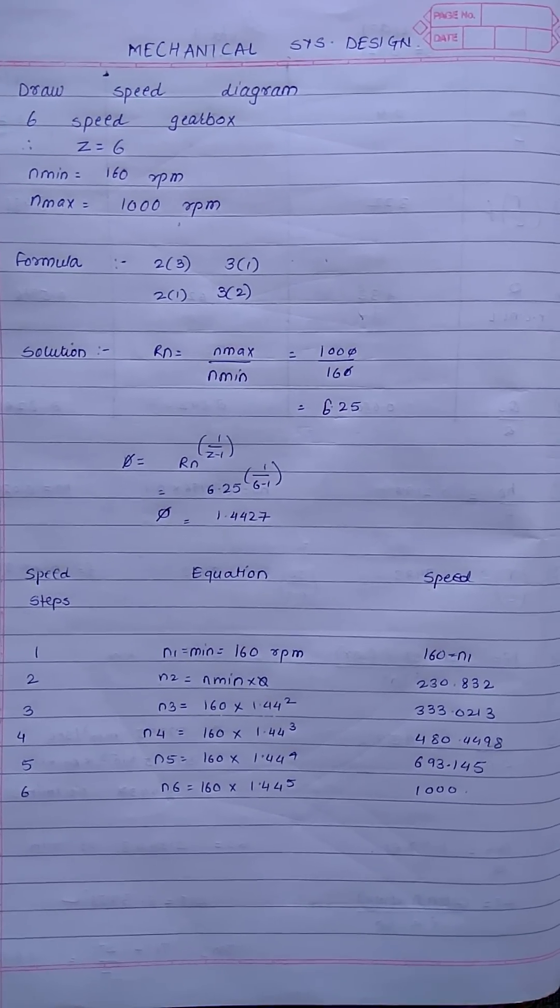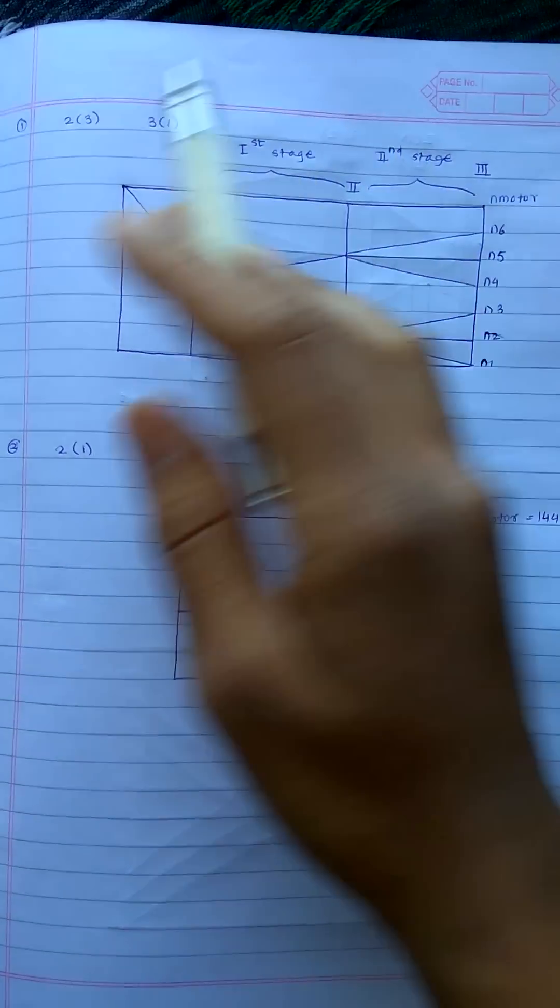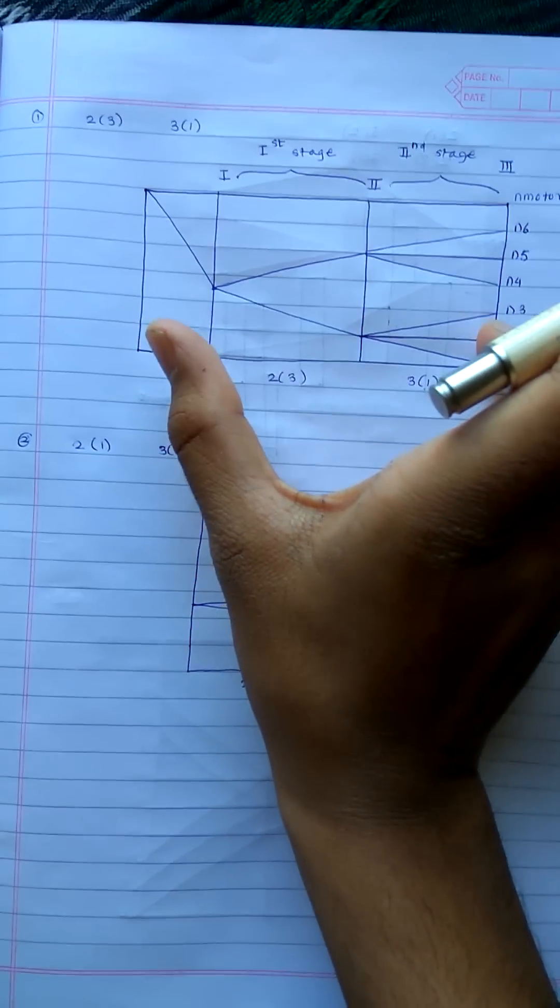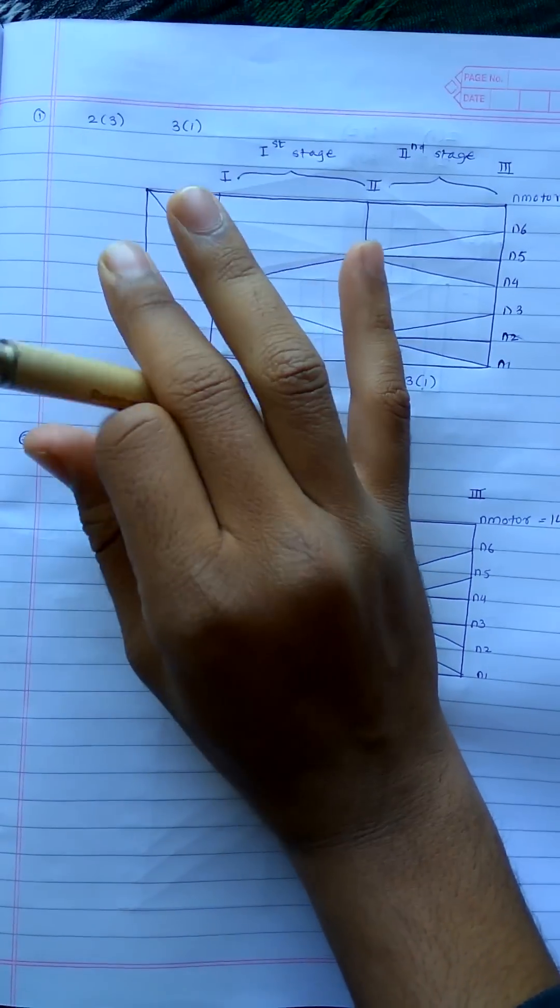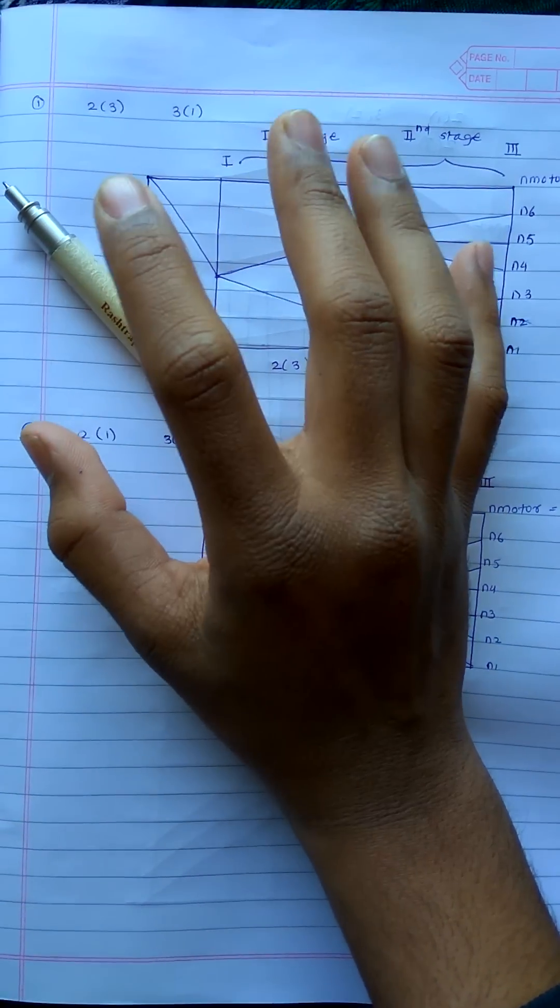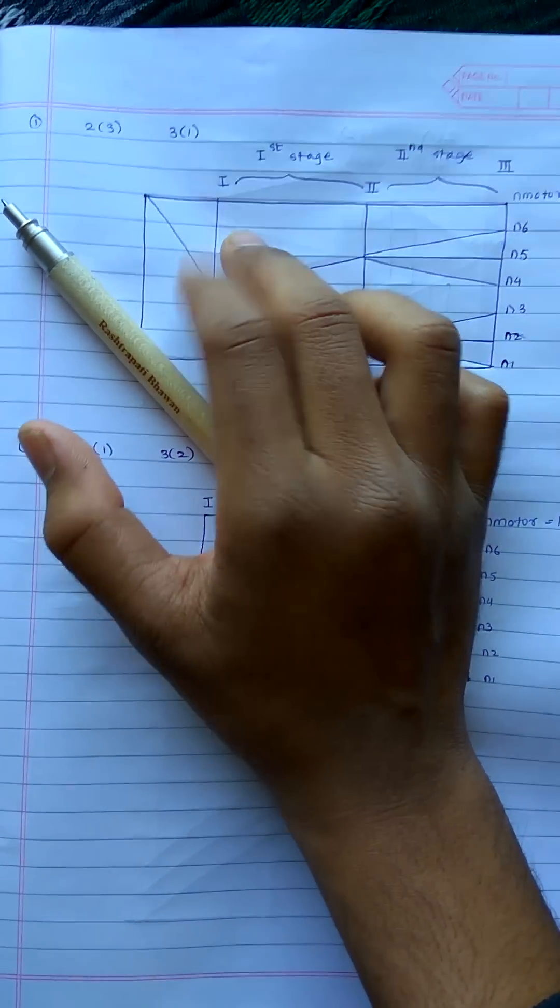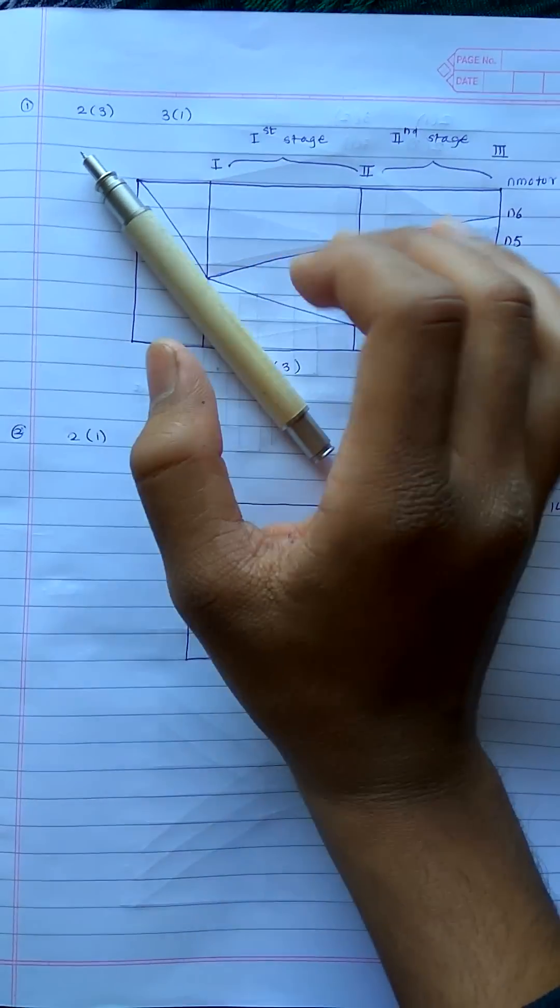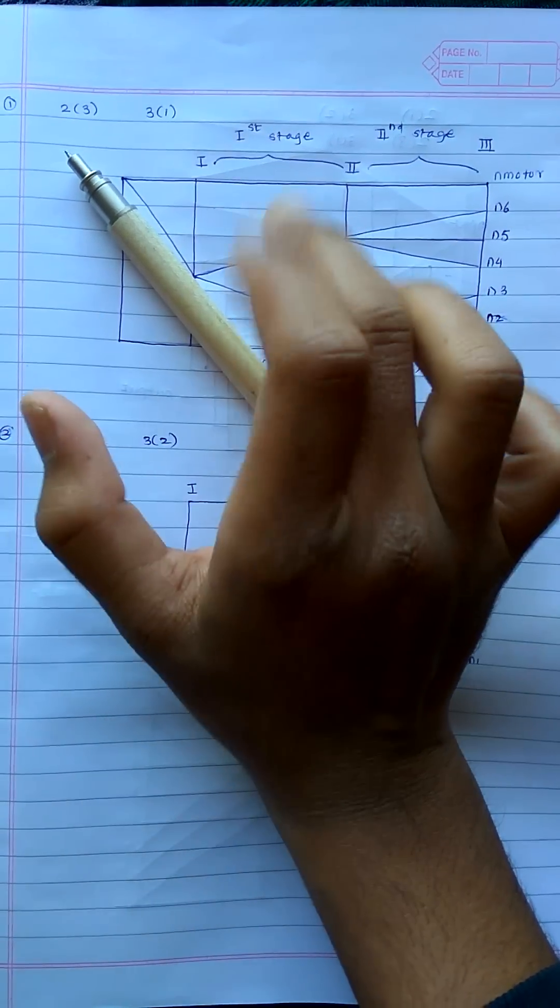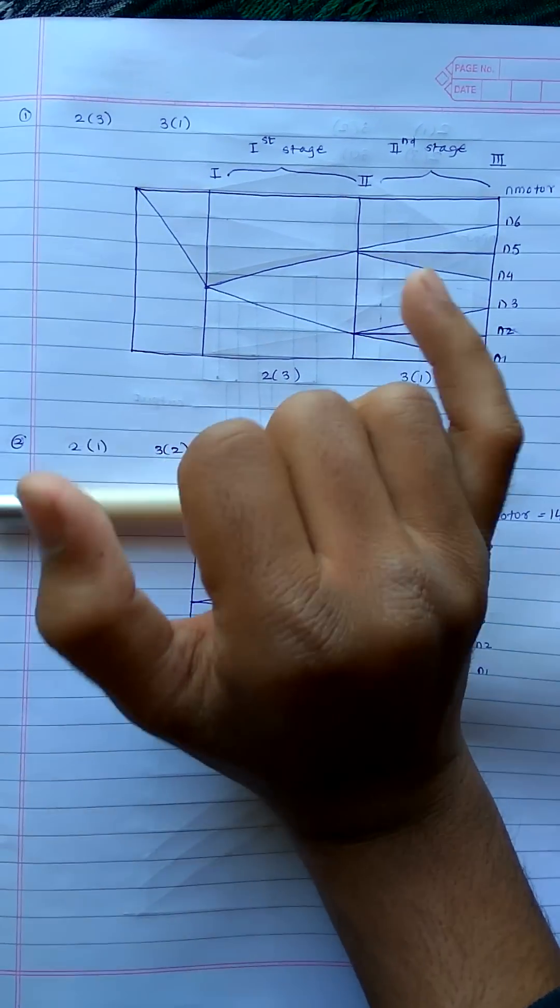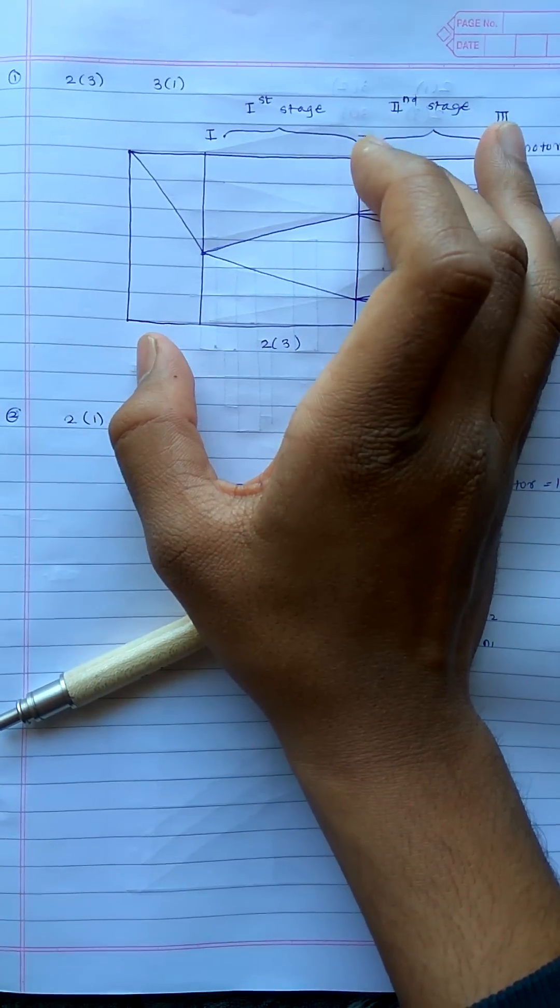Let's draw the structural diagram. So for the first formula 2-3 and 3-1, let's see how to draw the structure. This is the structural diagram. We have 3 diagrams: structural, ray, and speed diagram. The last one will be the gearbox design which shows the number of gears and their placements. Based on this, you can calculate which is the best diagram and which will have maximum stage efficiency.